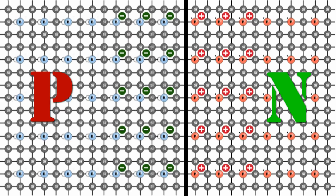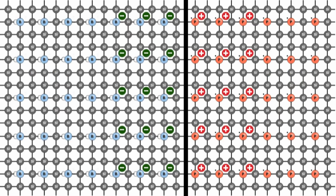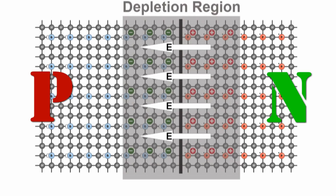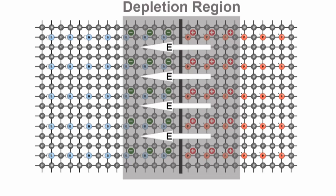At a certain point, the p-n junction reaches an equilibrium. At that stage there is no diffusion of electrons, and there will be a region around the junction called the depletion region — where there are no free electrons, no free holes, only ions of the impurities are present.